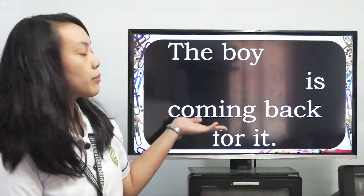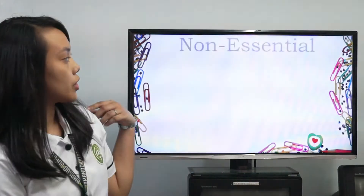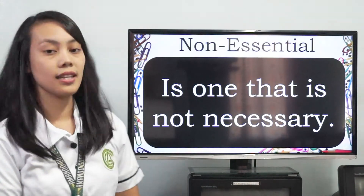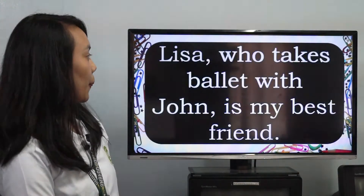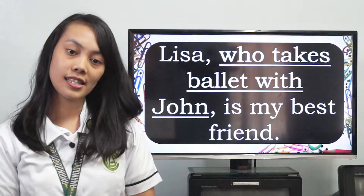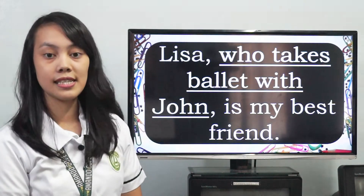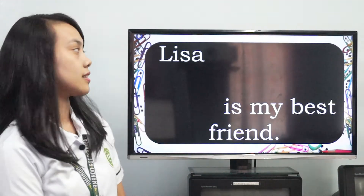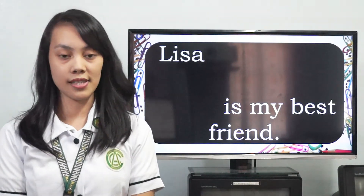Now let's move to the non-essential relative clause. It is one that is not necessary. Here's an example: Lisa, who takes Bali with John, is my best friend. The relative clause in this sentence is who takes Bali with John. The clause here can be eliminated without damaging the meaning of the sentence — like this: Lisa is my best friend. You can still understand the thought of the sentence.